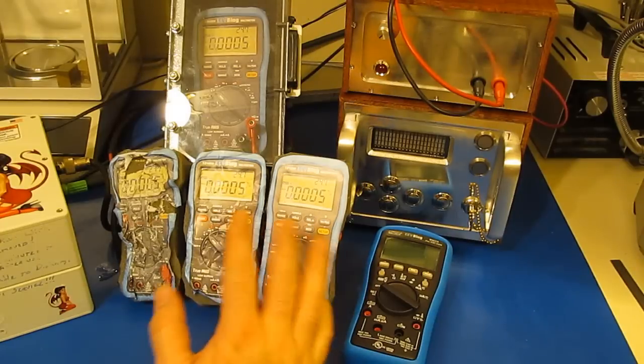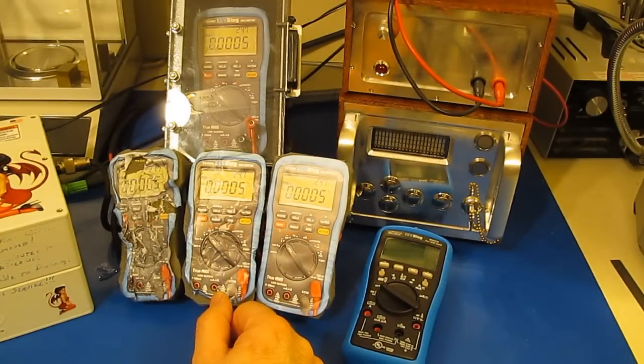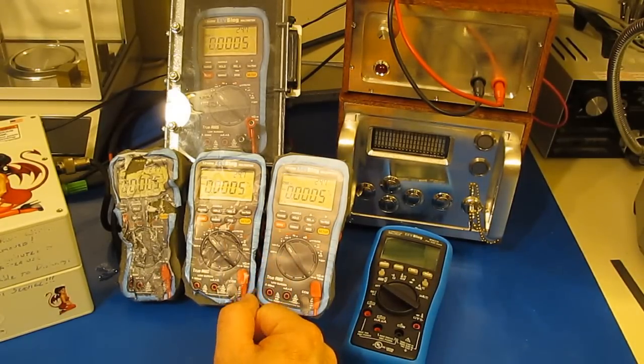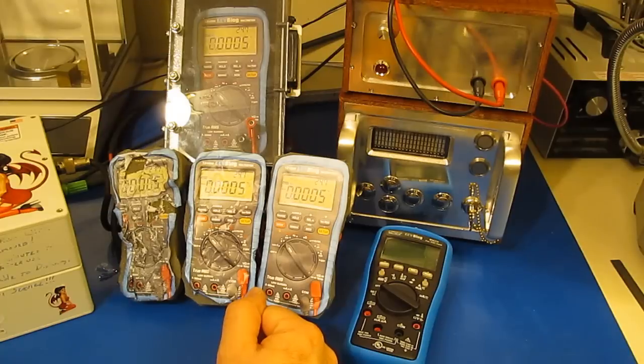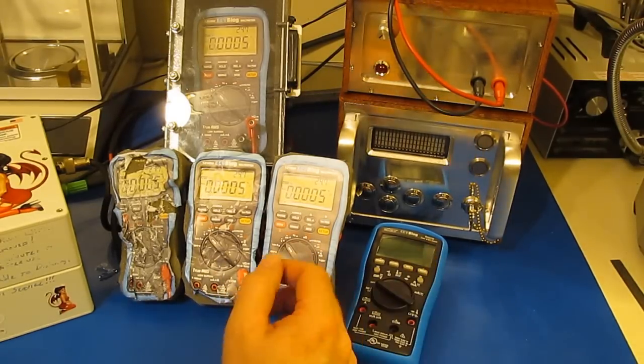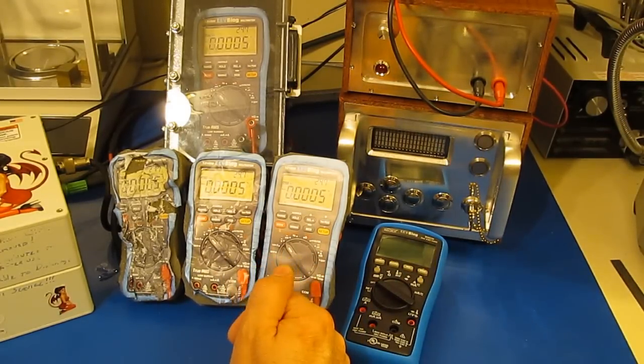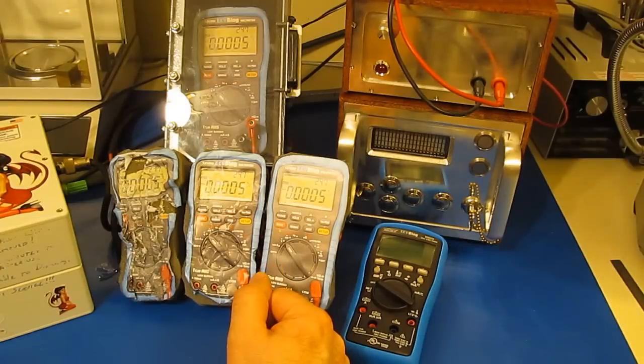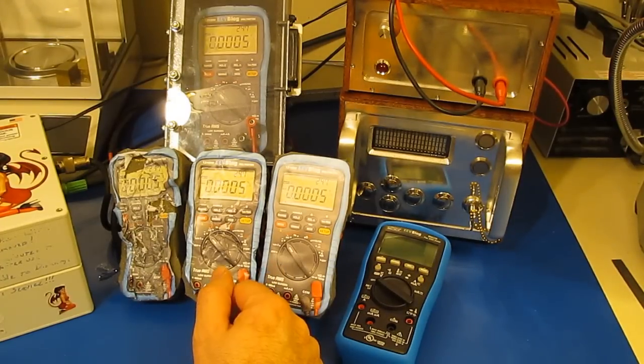So I've started a poll up on the EEV blog site, and I have a few different meters selected, or you can basically pick your own. Whatever meter you want to see me run is fine with me. I really don't care. We could even rerun the 87V if you think that's the meter you want to see ran.